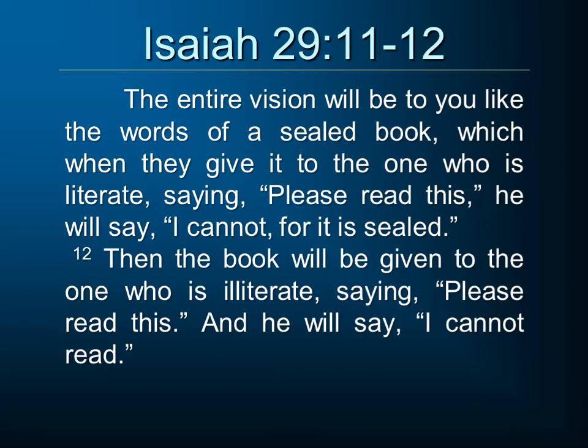Verse 11: 'The entire vision will be to you like the words of a sealed book.' Remember, they didn't have books bound on one end — think scroll, a sealed scroll. Which when given to the one who was literate, saying 'please read this,' he says, 'I cannot — it's sealed, it's all shut up, I can't open it.' Verse 12: 'Then the book will be given to the one who is illiterate, saying please read this, and he will say I can't even read.' God's plans are a mystery at this point, even to some of those prophets and seers. Of course, Isaiah is seeing those plans and describing them.